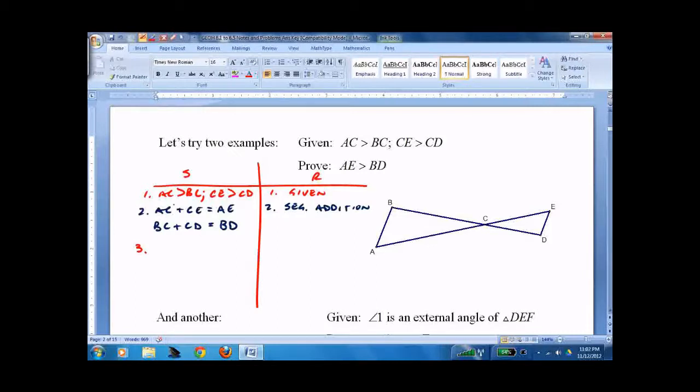So, now we know that AC is greater than BC. CE is greater than CD. So, we can say AC plus CE, since each one of these are bigger than the other two parts, is greater than BC plus CD.